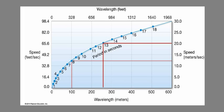Versus a longer period wave — say 13 seconds — that translates to a longer wavelength of about 260 meters and a speed of about 20 meters per second. So the longer the period, the longer the wavelength, and the faster the waves travel. This is really useful because it lets us predict how fast the waves are going to get here and what they're going to do when they arrive.